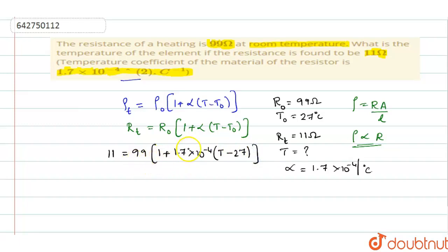We shall take 99 to the other side. So, this becomes 11 divided by 99 which is 0.111, equal to 1 plus 1.7 into 10 power minus 4 into T minus 27.